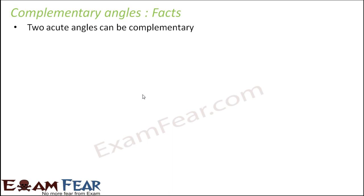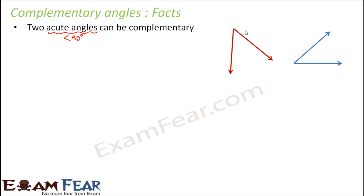First we will talk about complementary angles. Can two acute angles be complementary? Acute angles are those whose value is less than 90 degrees. Can you add two angles lesser than 90 degrees and get a sum of 90 degrees? For example, 50 degrees plus 40 degrees equals 90 degrees, so these two are complementary. Yes, two acute angles can be complementary.